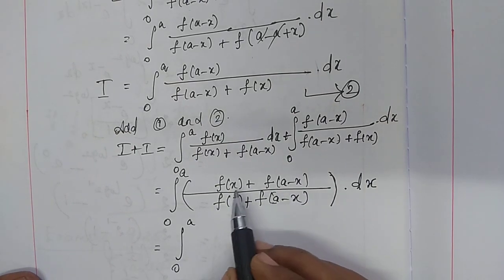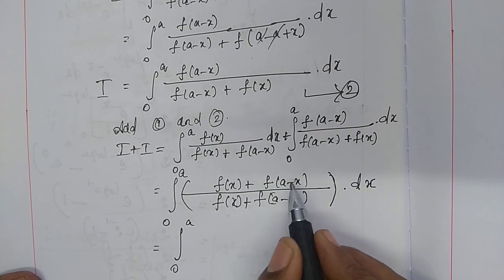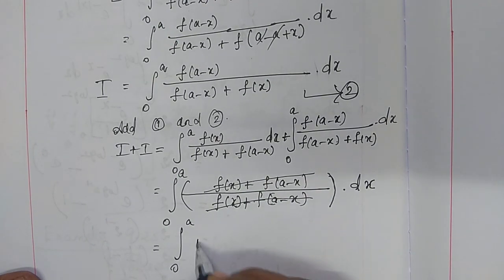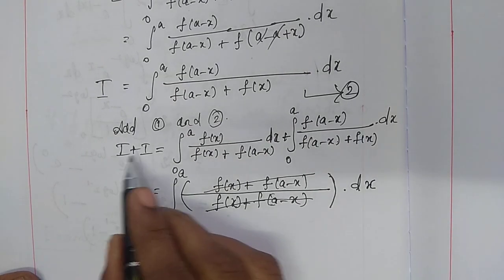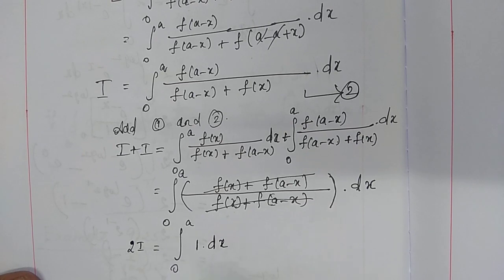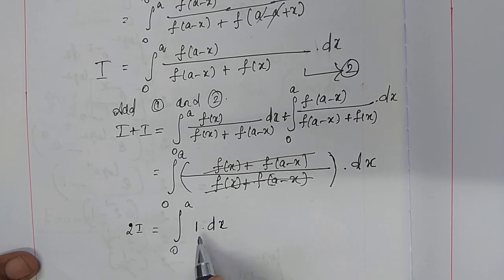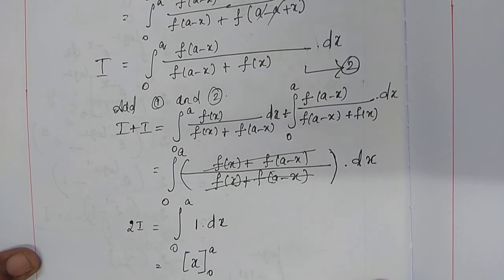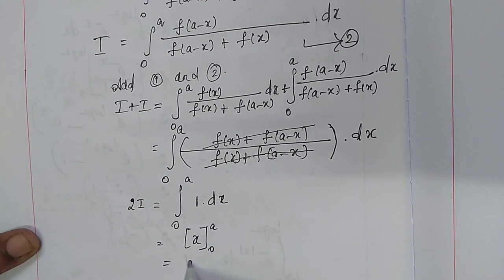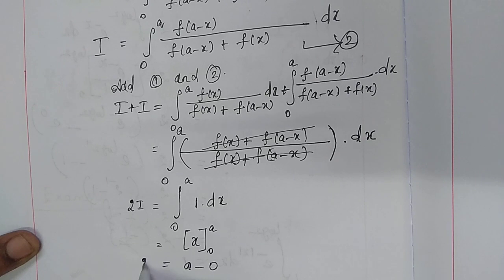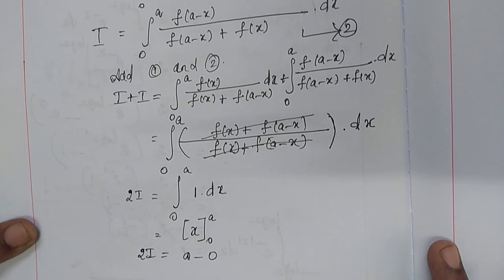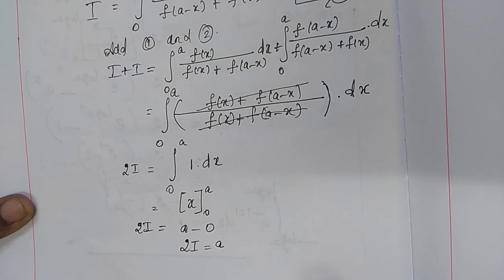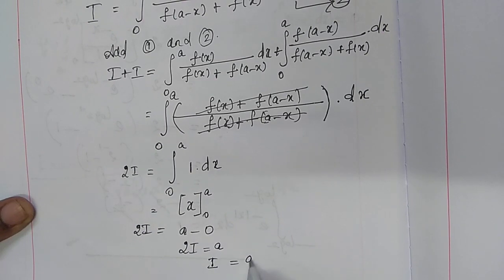The terms in the numerator and denominator are the same, so they cancel, leaving 1 into dx. The left side i plus i equals 2i. Applying the integral, we get the integral from 0 to a of 1 dx, which equals x evaluated from 0 to a, giving a minus 0. So 2i equals a, therefore i equals a divided by 2.